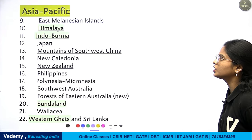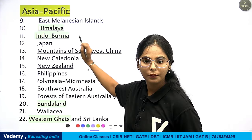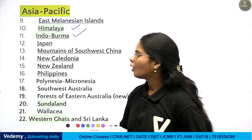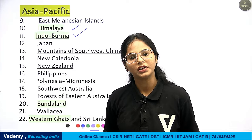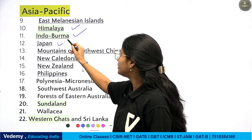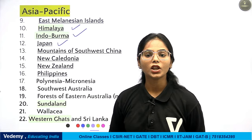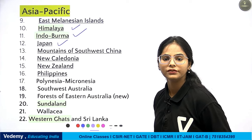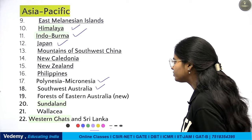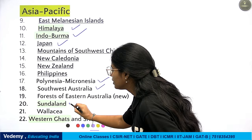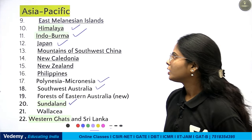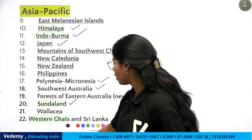For Asia Pacific: East Melanesian Islands, Himalaya, Indo-Burma — these two regions include parts of India. Also Japan, Mountains of Southwest China, New Caledonia, New Zealand, Philippines, Southwest Australia, Polynesia-Micronesia, Forests of East Australia, Sundaland — which also includes some parts of India — and Western Ghats and Sri Lanka. These are the Asia Pacific hotspots.